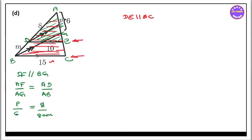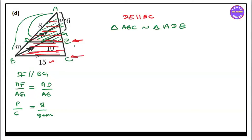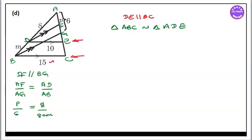Triangle A, B, C similar to triangle A, B, C — A, D, E. Now, triangle A, B, C and A, D, E.